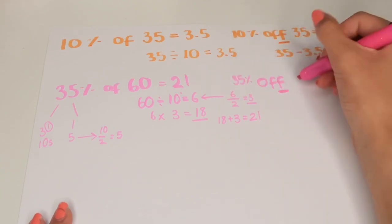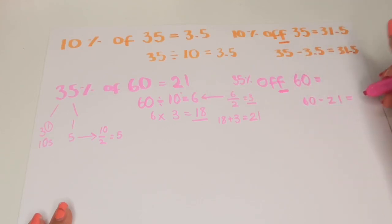Again, the question is now asking what is 35% off of 60. So we just do 60 minus 21 which equals 39.